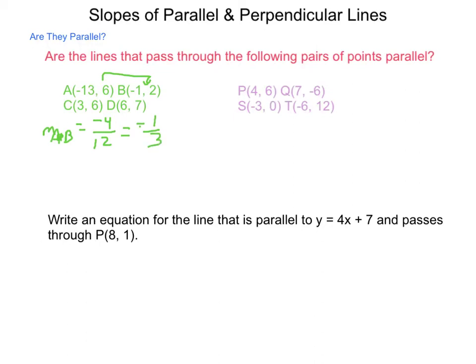Now, let's look for line segment CD. The slope of CD is going to equal from 6 to 7, that's a rise of 1. From 3 to 6, that is a run of 3. And there's nothing to simplify here. So yes, these are parallel.